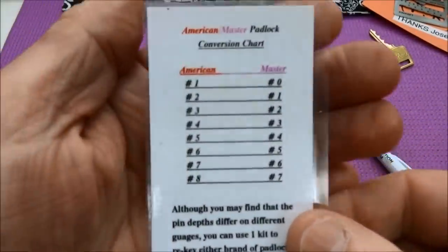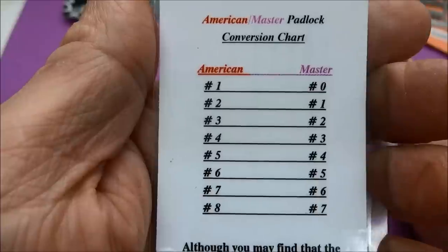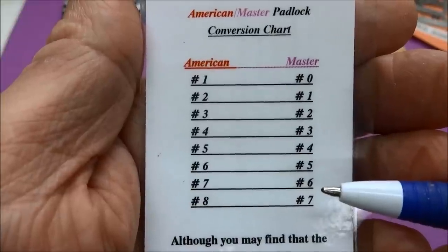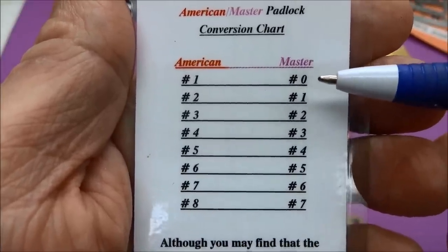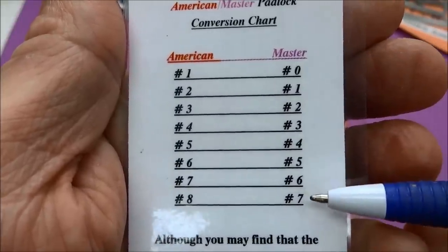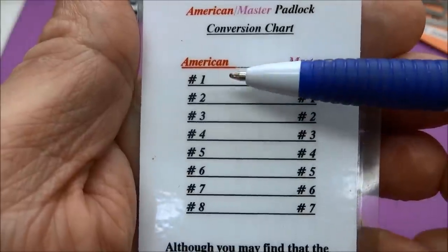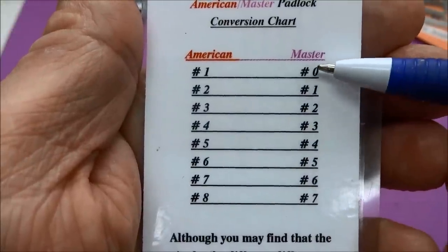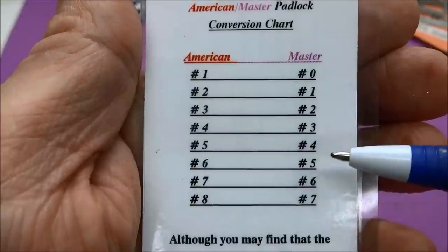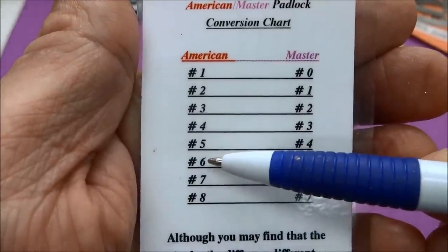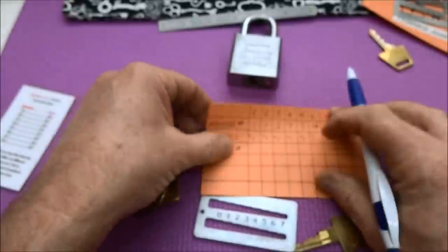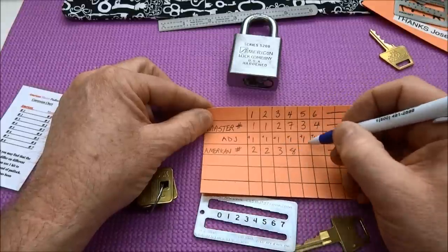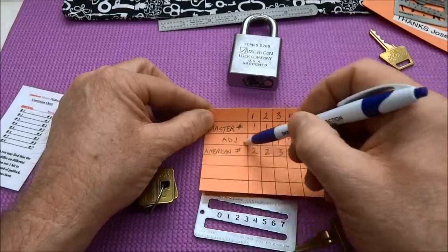What we've done here is we've used the Master gauge to measure an American key, so we have to make an adjustment. Master has eight pins numbered zero through seven, and American also has the same eight pins but numbered them one through eight. All we really need to do is add one. We measured with a Master gauge, so we add one to the Master number and that gives us the American cut number: two, two, three, eight, four, and five. This is what we want to cut our code to.